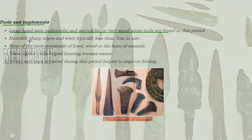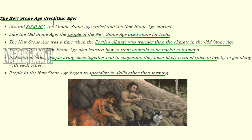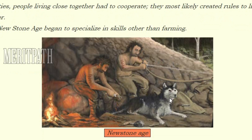Around 8,000 BC, the Middle Stone Age finished and the New Stone Age, or Neolithic Age, began. People again started using stone for tools, and the Earth's climate was warmer during this period. They learned how to train animals to be useful to human beings. People living close together had to cooperate, so they created rules to live together and get along. They also specialized in skills other than farming. This is an image of the New Stone Age where the dog was tamed and domestication of animals began.